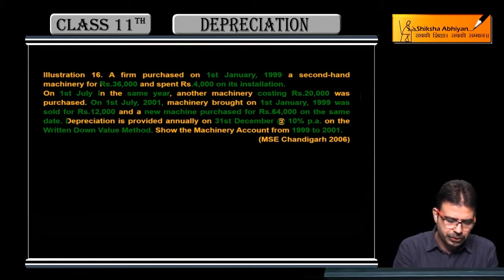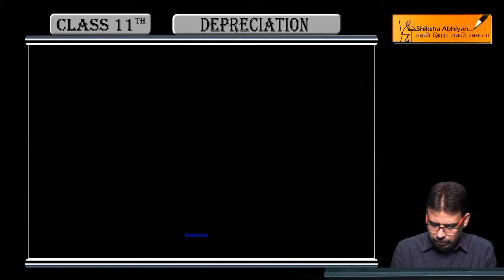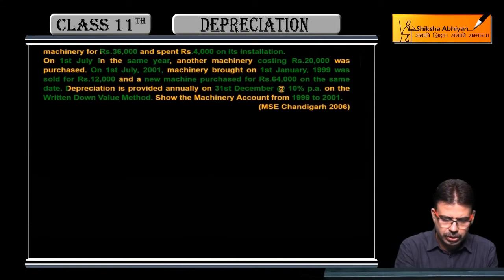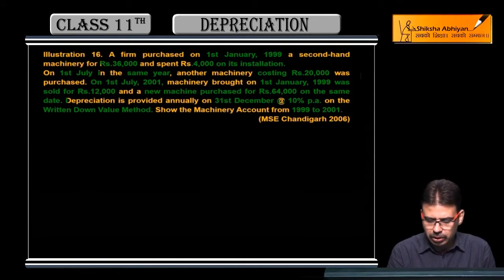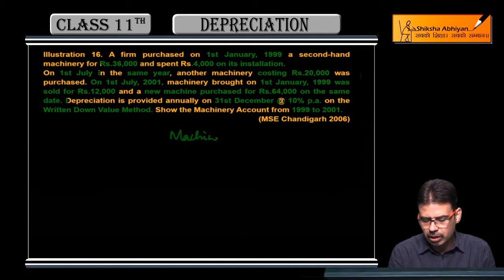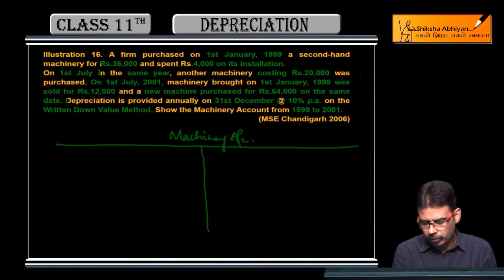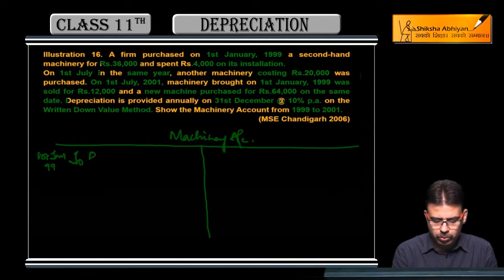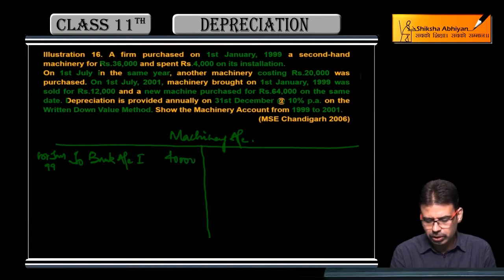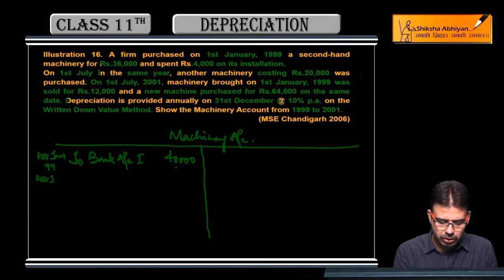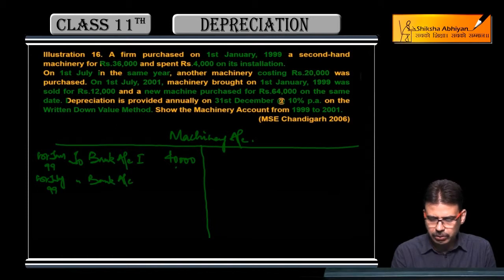Okay, let's start with this solution. Working notes - in these questions working notes are very important. So machinery account: 1st January 1999 to bank account, first machinery 40,000 (36 plus 4,000). 1st July 1999 to bank account, 2nd machinery.